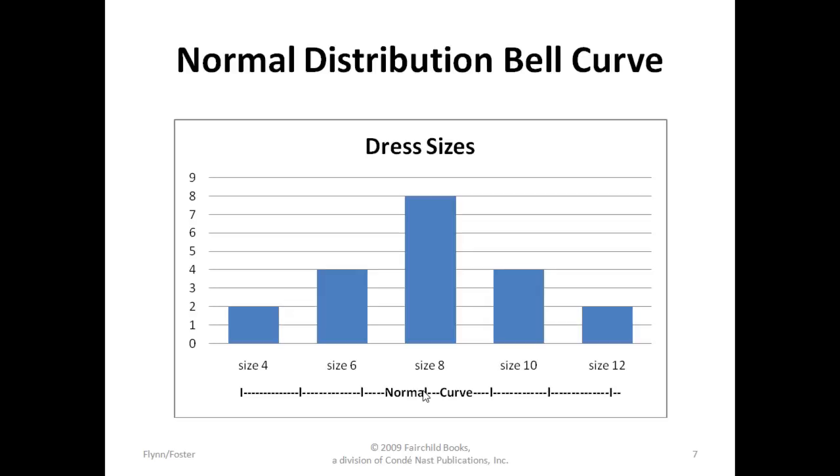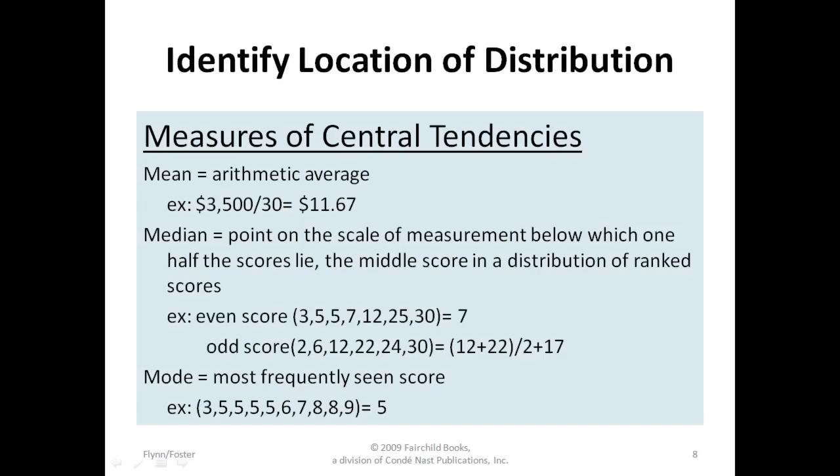Some things to note about a normal distribution: they are symmetric, it's the bell curve. Your mean, median, and mode are located under the peak, and approximately 68% of the observations are within one standard deviation of the mean.